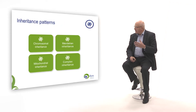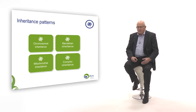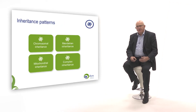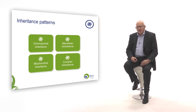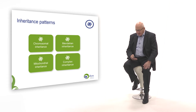What we are going to explain is how the chromosomes are transmitted from one generation to the next, and also how genes with aberrations — which we call mutations — are transmitted. These are called inheritance patterns. We have four types: chromosomal inheritance, Mendelian inheritance, mitochondrial inheritance, and complex inheritance. Each of these will be dealt with in the next minutes.